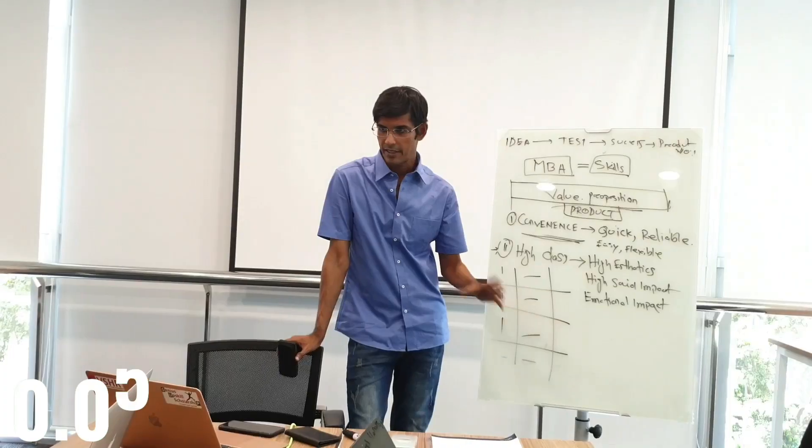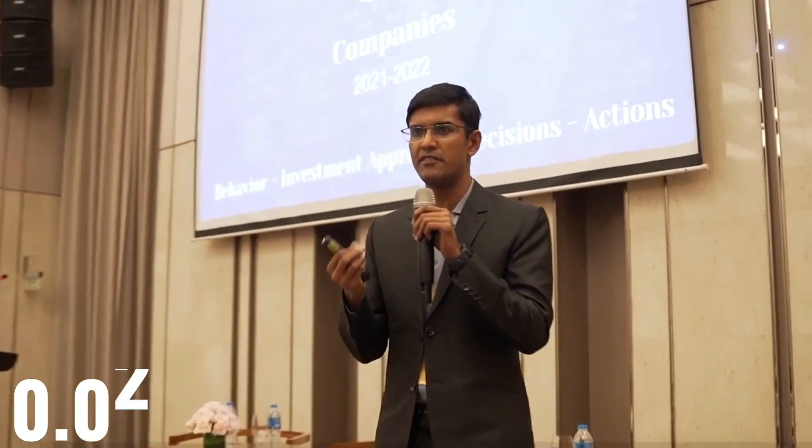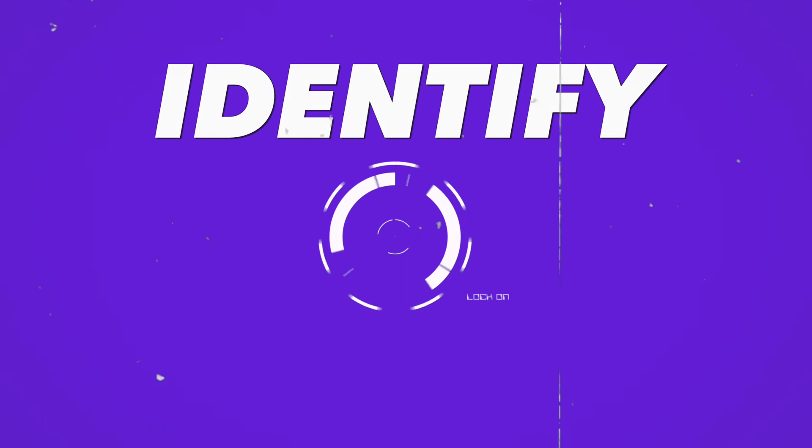Number one: identify and visualize. What we cannot see, we cannot measure. So the first goal is to identify and visualize them. When I want to break a bad habit, I will be really specific - identify exactly what particular bad habit I want to break. What I normally do is use a yellow sticky pad, write down the bad habit, and stick it in front of my wall.